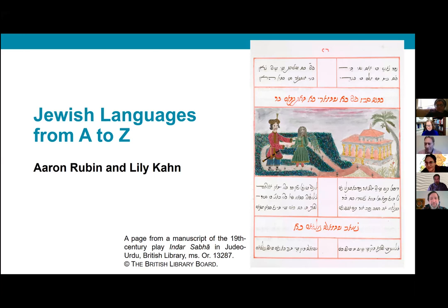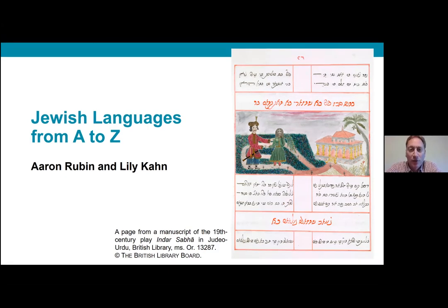I'm going to ask the authors to introduce themselves briefly so you can find out about their affiliations. My name is Aaron Rubin. I'm a professor at Penn State University, and I am a Semitist by training, but the last five or eight years or so, I've been very interested in the field of Jewish languages. I hope that I interest some of you in that field as well today.